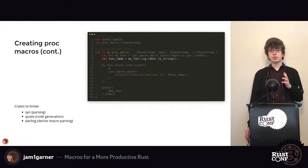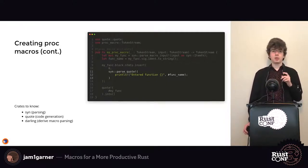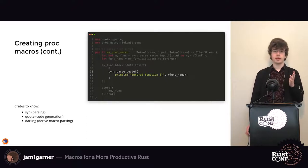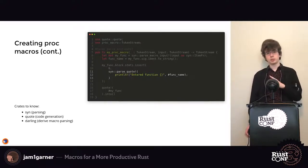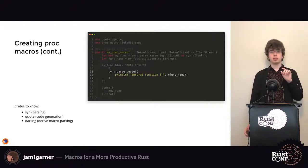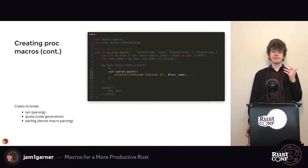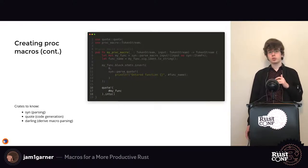We take the function name and convert it to a string. Then we use `parse_quote!` from the quote crate, which lets you pseudo-quote your code and convert it to tokens — you write whatever code you want, template tokens into it, and it parses the result into a statement. We insert that statement at the beginning of our function block, then use quote! to convert the modified function back into tokens and return it. That's all it takes.